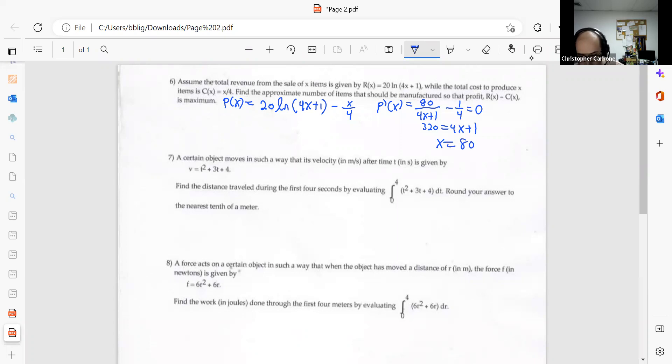We subtract 1 divided by 4, which gives us about 79 and change, but we're going to round that up to 80 since we're talking about the number of items. You can't really have a fraction number of items to produce or manufacture.